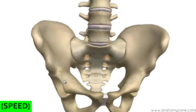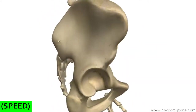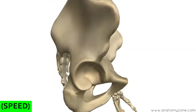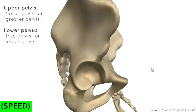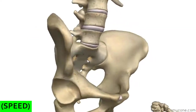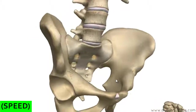The pelvis is separated into two regions. You've got the upper region, the superior part, called the false pelvis, also called the greater pelvis. And you've got the lower part, the inferior part, called the true pelvis or the lesser pelvis. The upper part is called the false pelvis because it's often regarded as part of the abdominal cavity rather than the pelvic cavity. The lower part is the true pelvis because it contains the actual pelvic cavity.